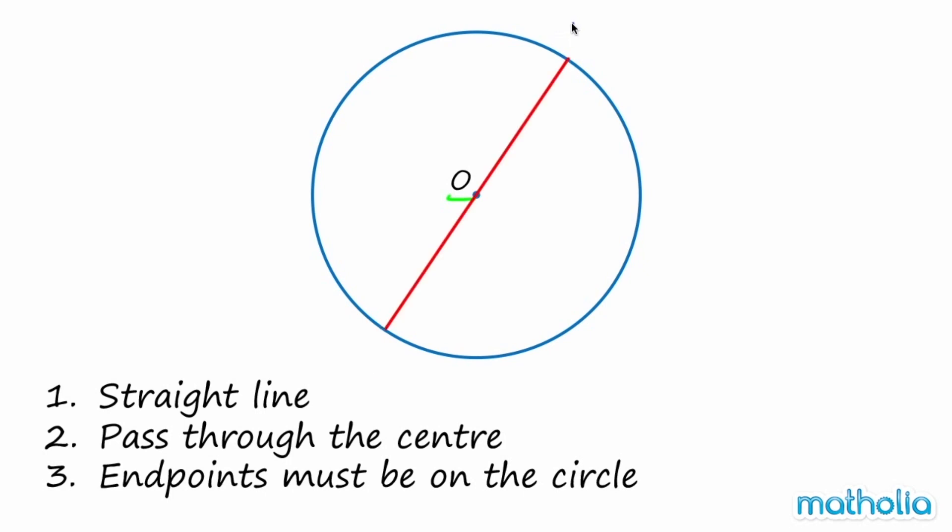Let's label the line PQ. So we can say that the straight line PQ is the diameter of the circle.